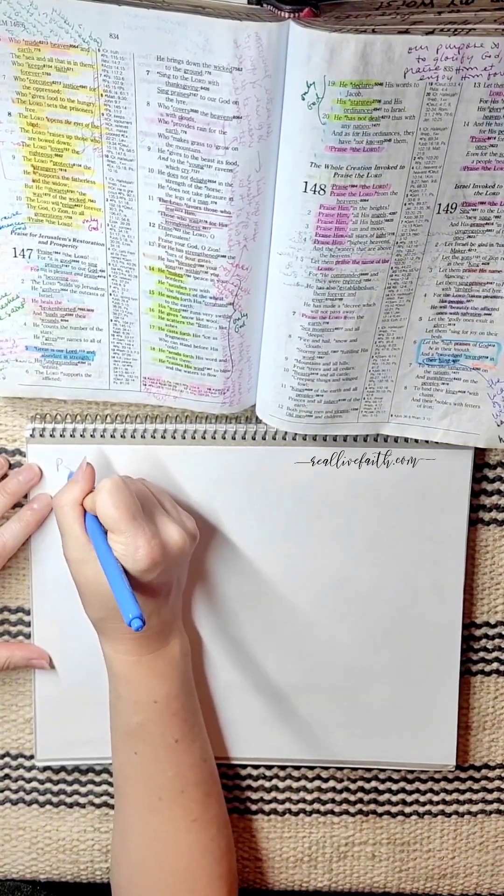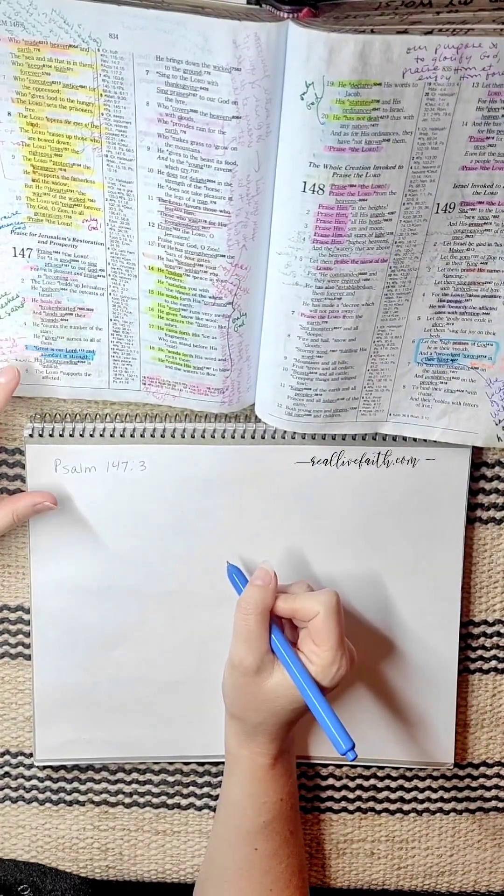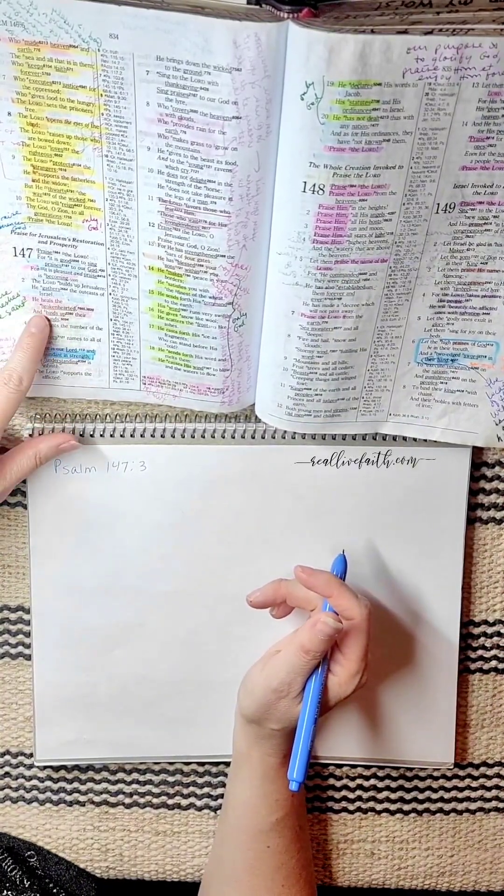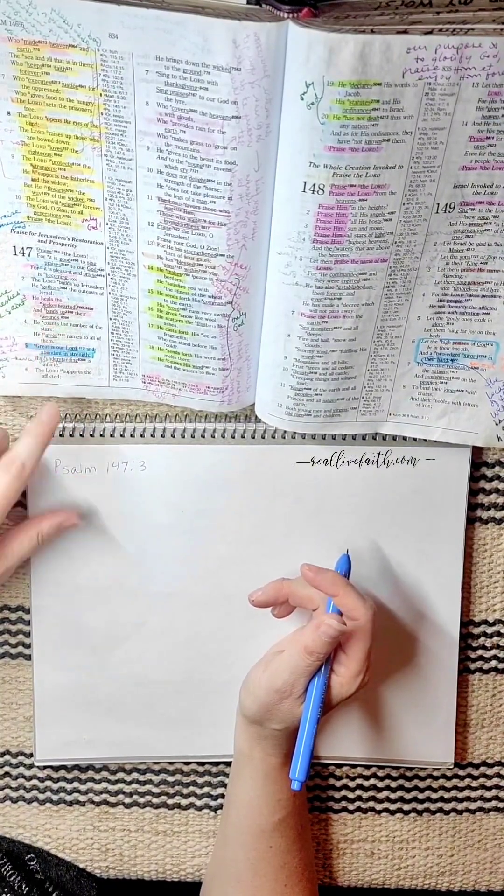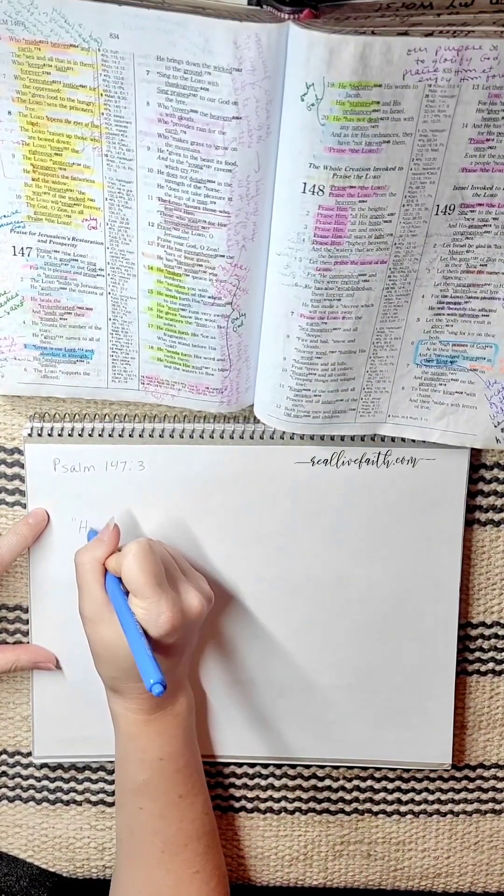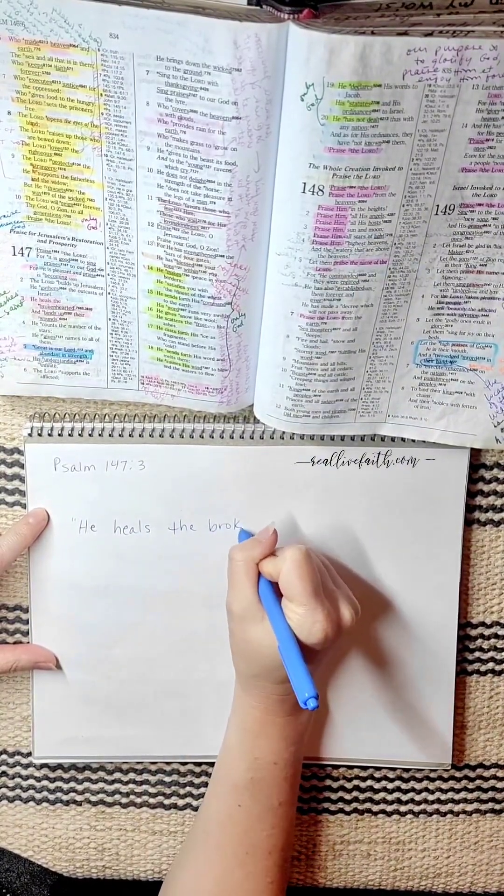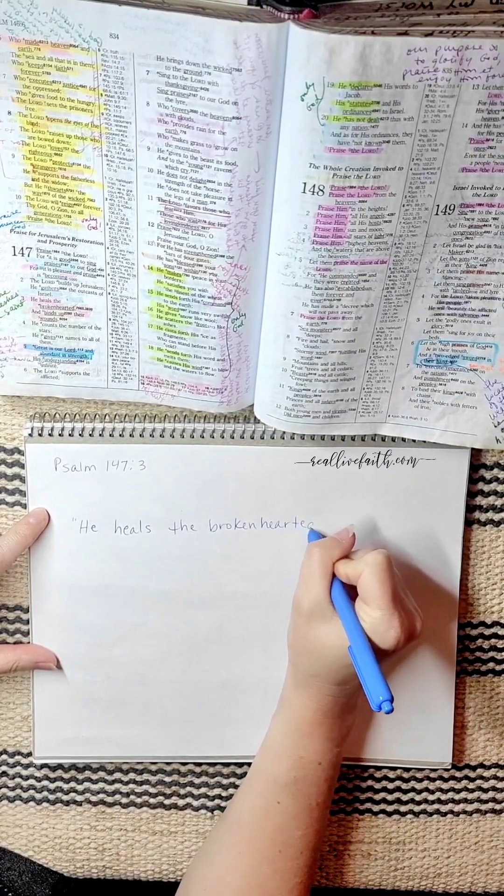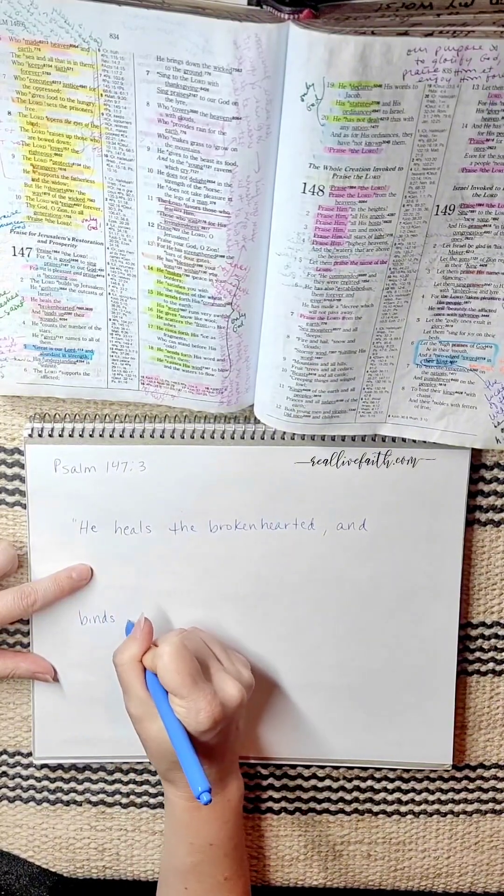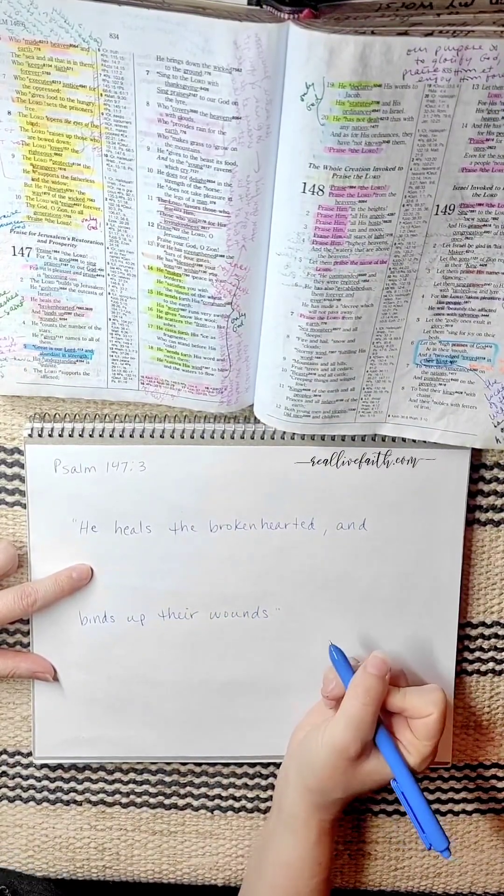So the verse that we're going to map out is Psalm 147 and verse 3. So in my version, I have the NASB, the 1977 edition, and it reads like this: He heals the brokenhearted and binds up their wounds. So I'm going to copy that down. I'm going to leave some space in between so that we have room to take notes. He heals the brokenhearted. And I'll just skip some space and finish the verse down here. Binds up their wounds.